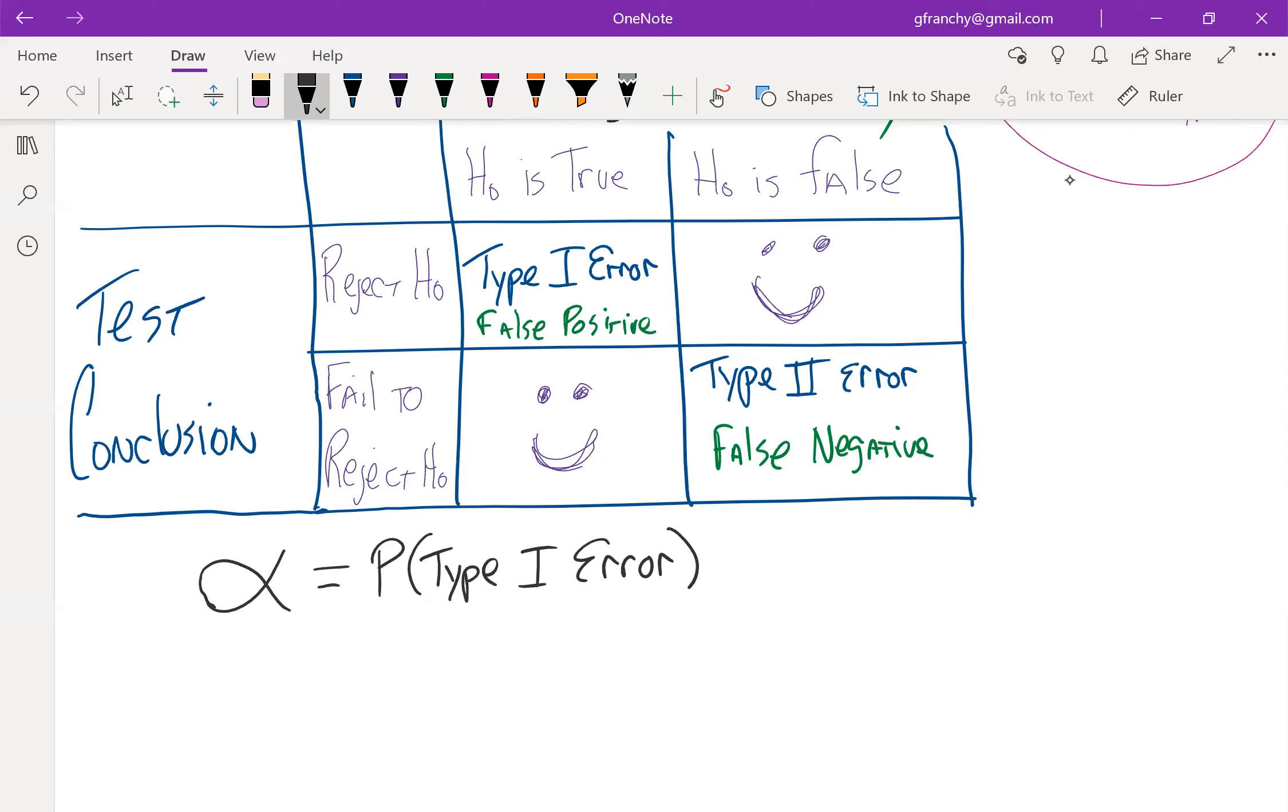And you might think that, hey, I'll just make it really small so I don't have to worry that much about a Type I error. But in addition to alpha, there's also beta.